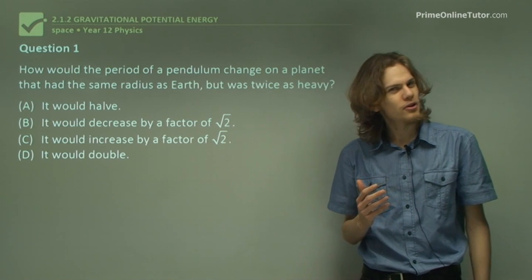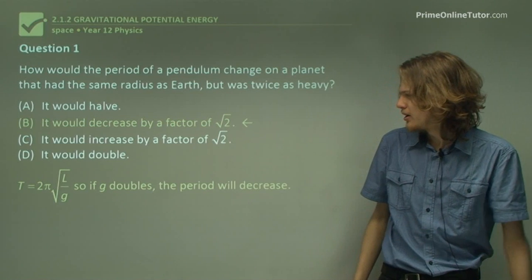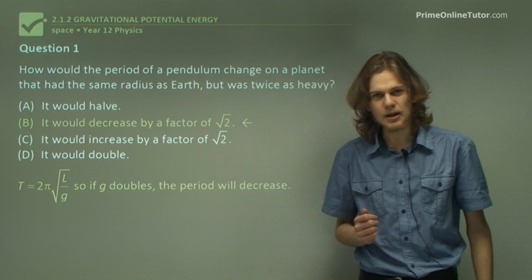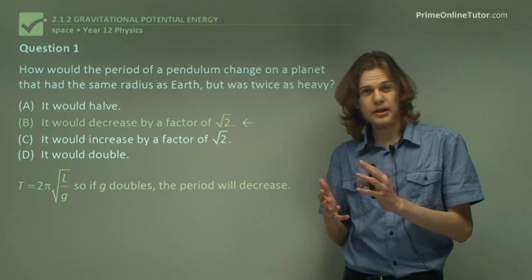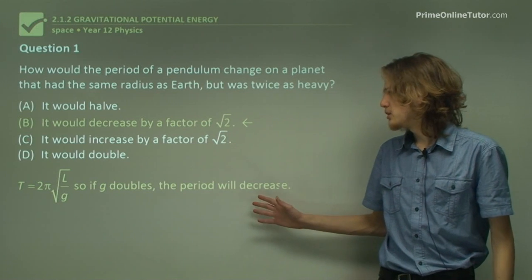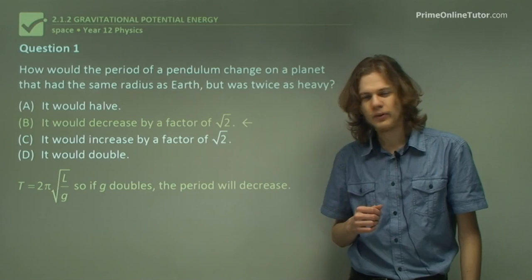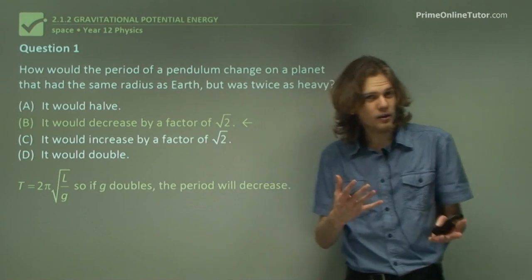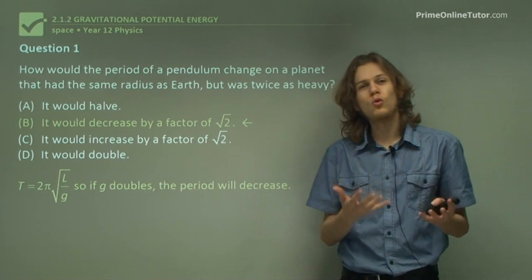The equation for the period is: period equals 2 pi times the square root of L over G. That means that if we double G, then the period is going to decrease by a factor of root 2. When G becomes larger, it's on the denominator, so the entire equation will become smaller.